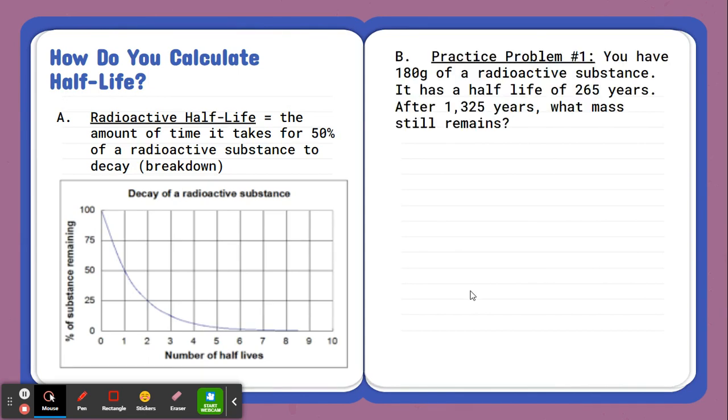So here in our notes, I put a little practice problem for us to try and solve. Practice problem one says you have 180 grams of a radioactive substance. It has a half-life of 265 years. After 1,325 years, what mass would still remain? So remember, you are using half-life concepts here. Take a moment and pause the video and see if you can solve it yourself.